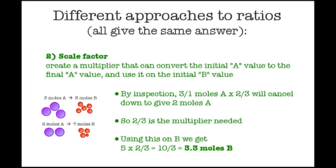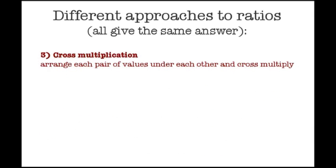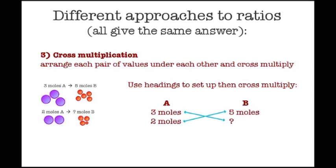The third method I'm going to cover today is called cross multiplication. Here we arrange each pair of values under each other and then cross multiply. This one's my favorite method and I tend to use it whenever I tackle a ratio problem because it works really well, really well under pressure. We'll take the same example again, and a key point to the method is using headings to ensure that all the information is in the right place.